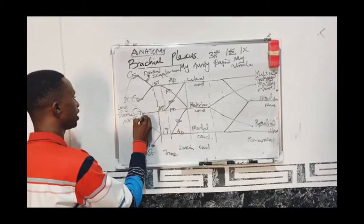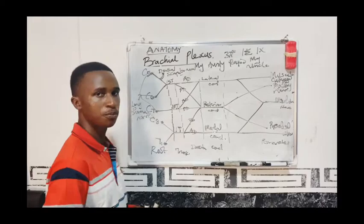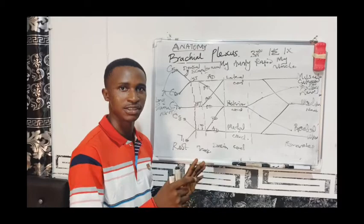You may be asked in an exam: the long thoracic nerve arises from which roots of the brachial plexus? — C5, C6, and C7. Take note, all of these nerves give innervation to muscles.